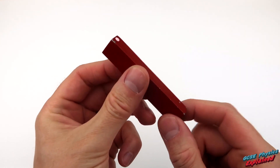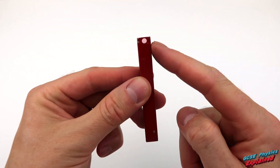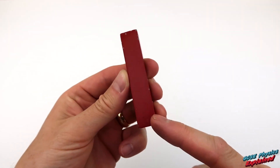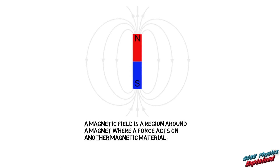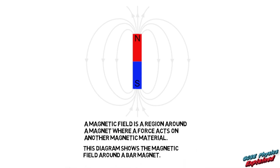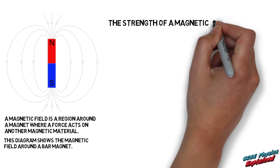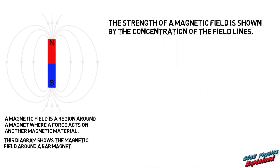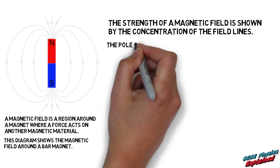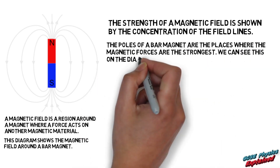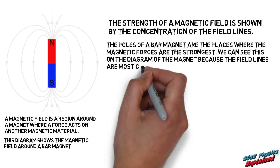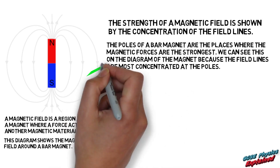I've got a bar magnet here. A bar magnet has a north pole at one end and a south pole at the other. A magnetic field is a region around a magnet where a force acts on another magnetic material. This diagram shows the magnetic field around a bar magnet. The strength of a magnetic field is shown by the concentration of the field lines. The poles of a bar magnet are the places where the magnetic forces are the strongest.